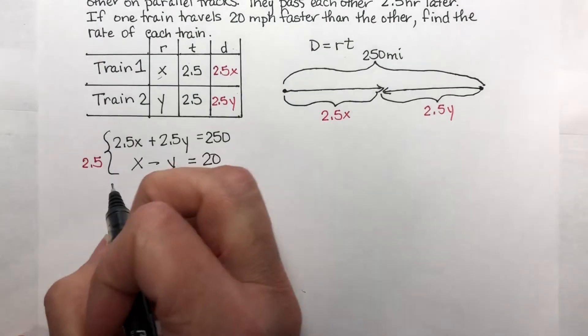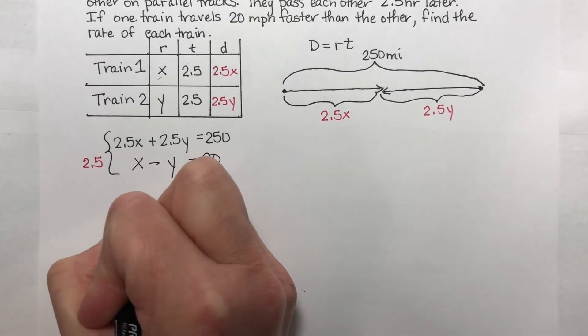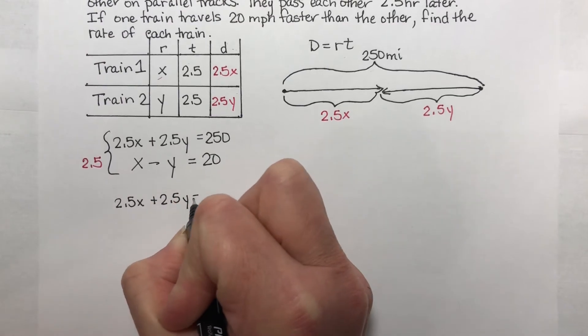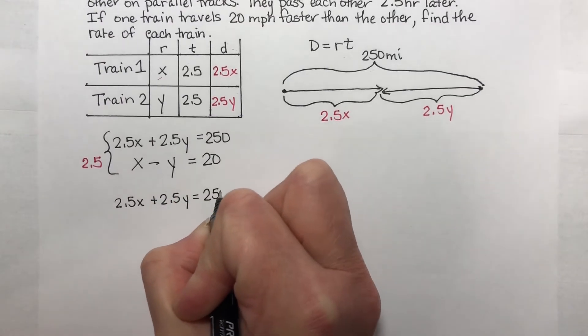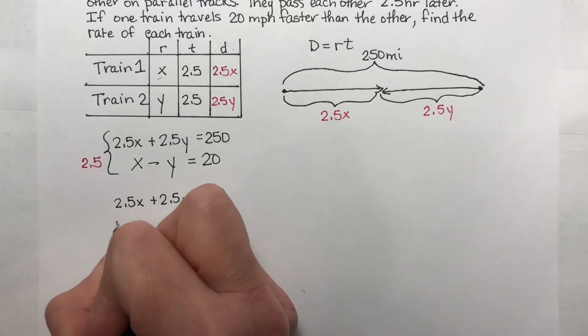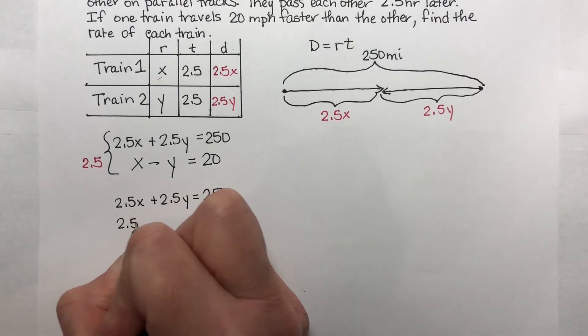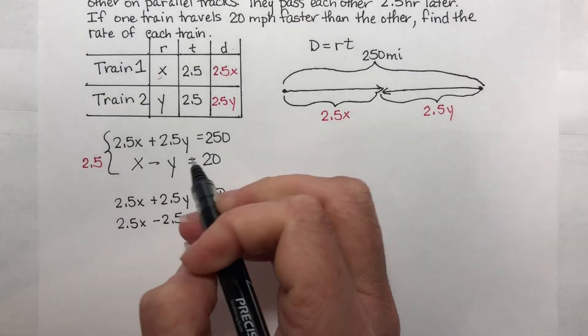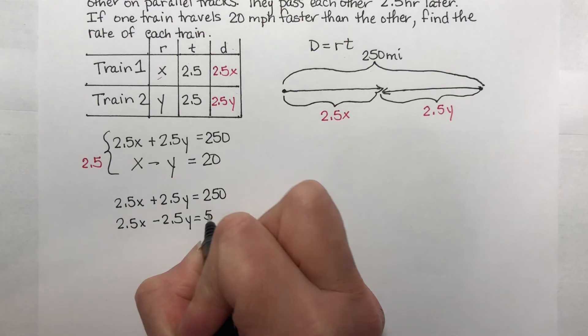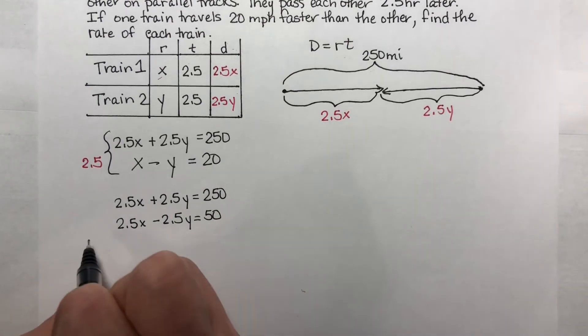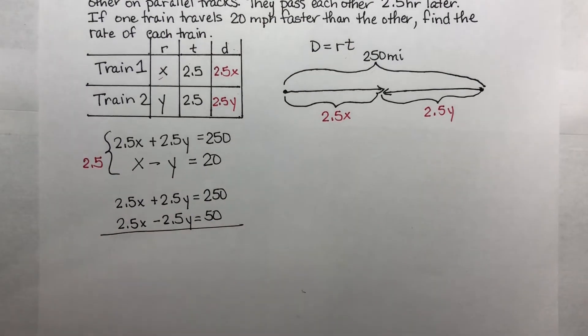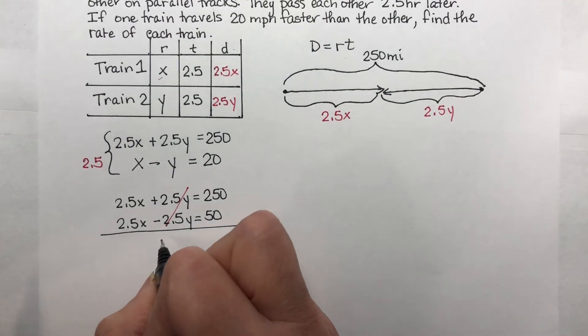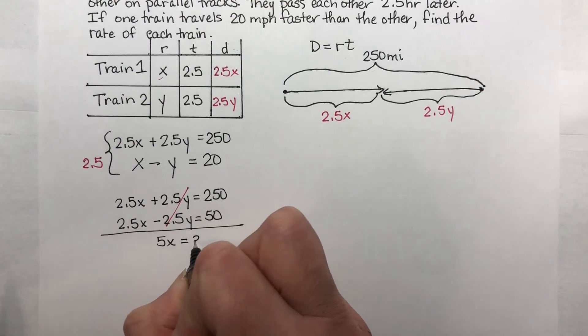That means I get 2.5x, I'm copying the first one, plus 2.5y is equal to 250. Now multiply this through by 2.5. I get 2.5x minus 2.5y is equal to 2.5 times 20 is 50. Now let's add these together. My y's cancel out as they should.